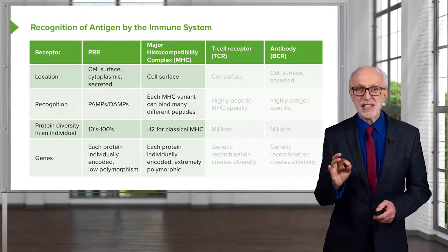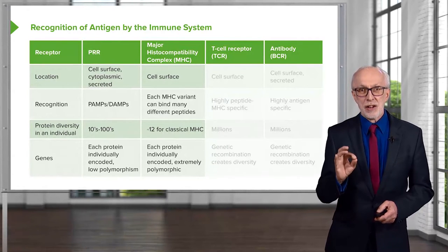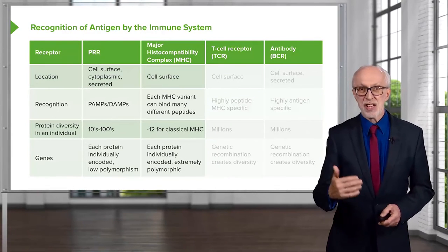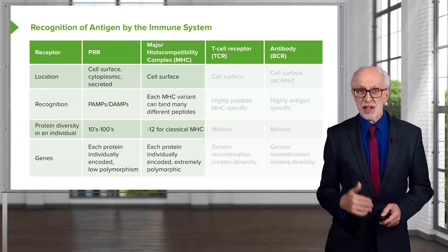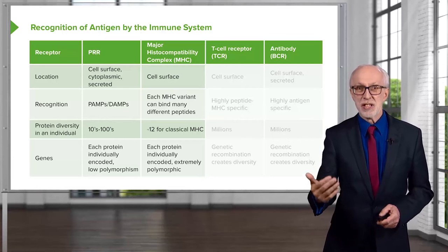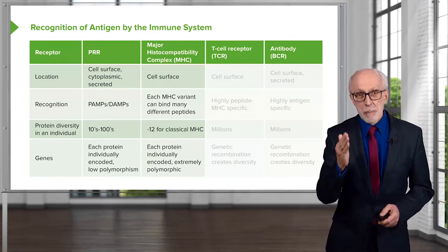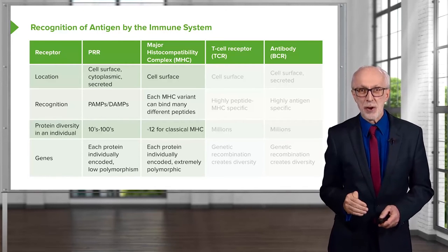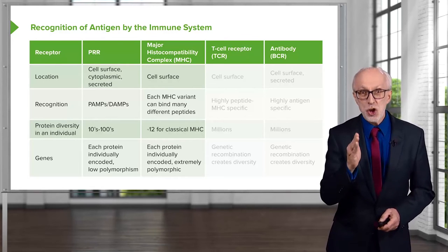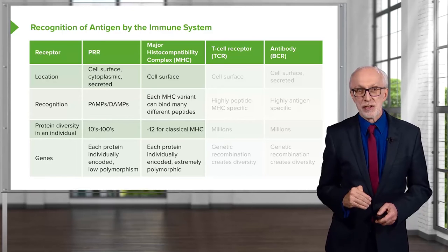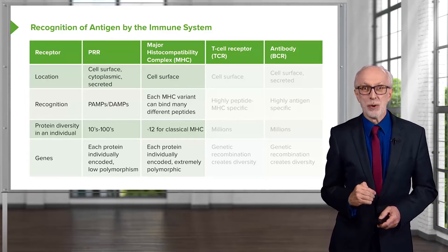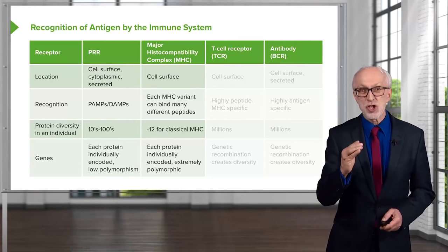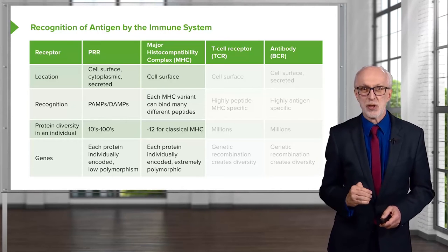Each protein is individually encoded. So for MHC class I in the human, we have HLA-A, HLA-B, and HLA-C. For class II, we have HLA-DP, DQ, and DR, and each of those will have its own gene. But at each gene locus — let's say the HLA-A gene locus — the sequence varies hugely from one individual to another. So my HLA-A molecules are probably different to your HLA-A molecules. Therefore, they are described as being extremely polymorphic between one individual and another.